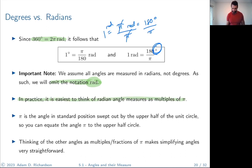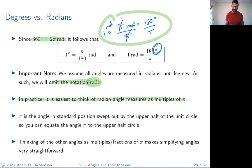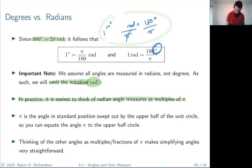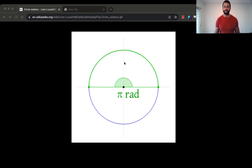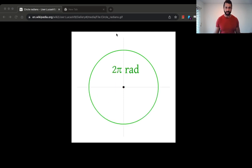In practice, it's easiest to think of radian angle measures as multiples of pi. When I say pi, visualize that half circle — pi radians is the upper half of the unit circle. Think of pi as that half circle. Everything else is a multiple or fraction of it.